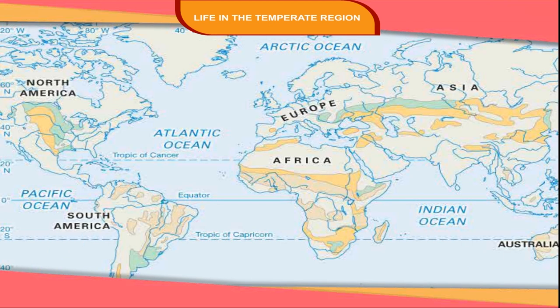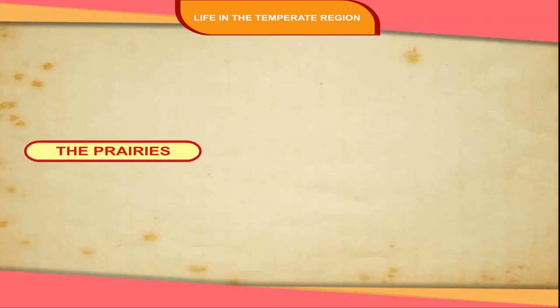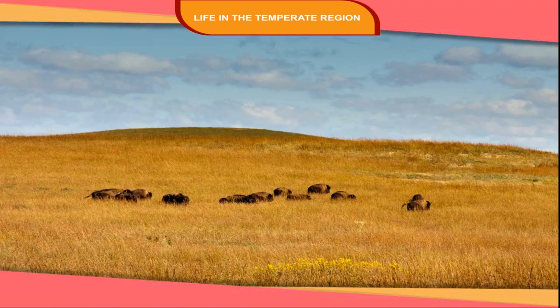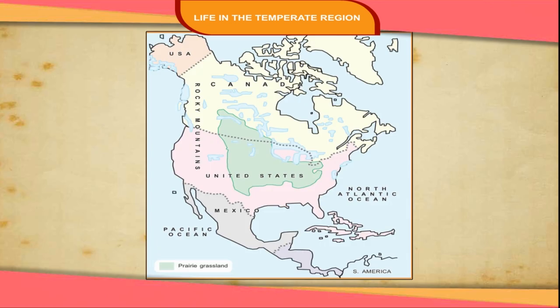In this lesson, we will learn about the life and activities of the people of prairies in North America and velds in South Africa. The Prairies: Temperate grasslands are known as prairies in North America. These are the famous grasslands of Canada and USA, which are located between the Rockies in the west and the Great Lakes in the east.